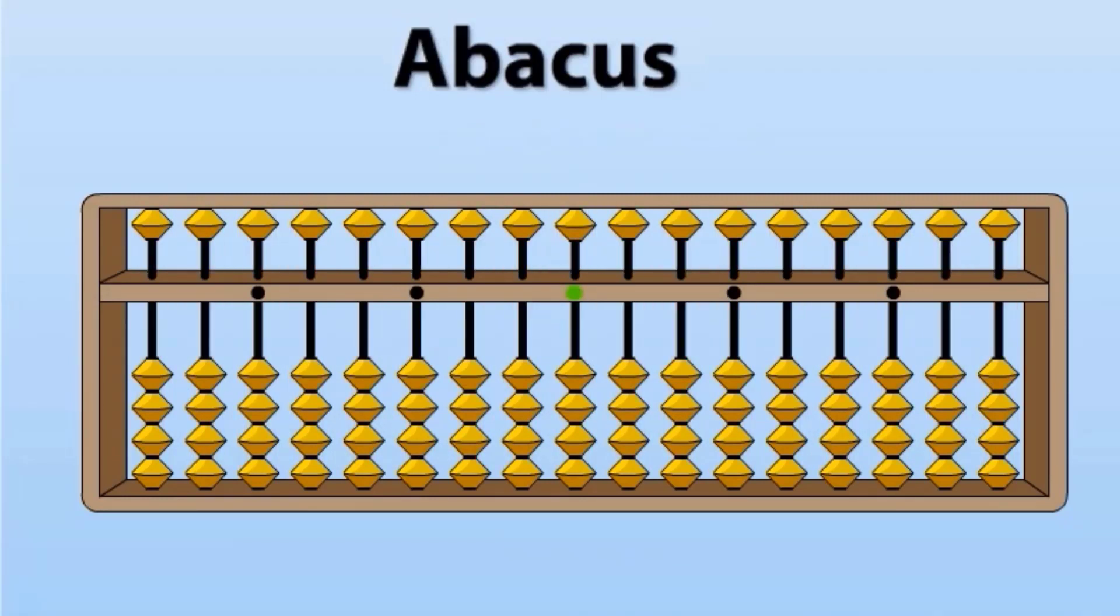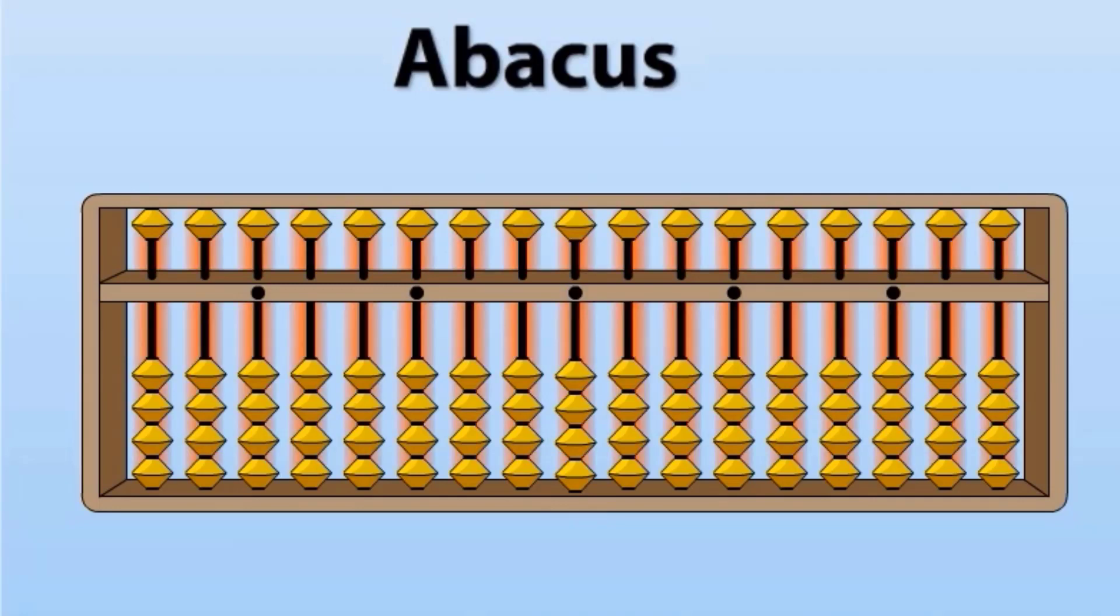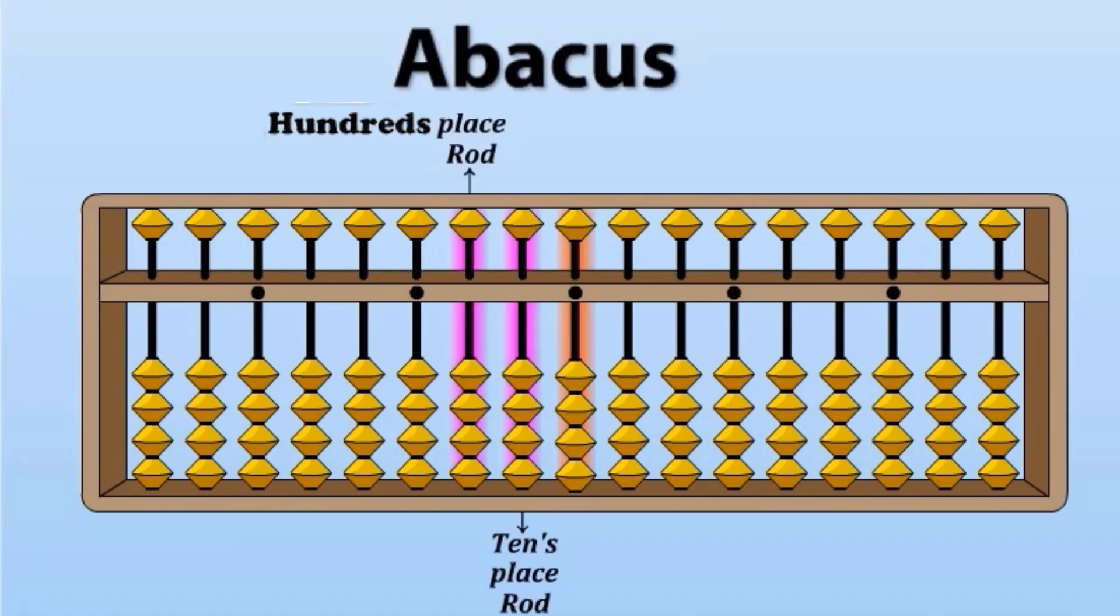Center rod or one space rod. We start our questions from this center rod. Rods to the left hand side are tens place rod, hundreds place rod and higher places rod. Whenever we start counting, we will start from center rod. Whenever a bead touches the value bar, it attains value.